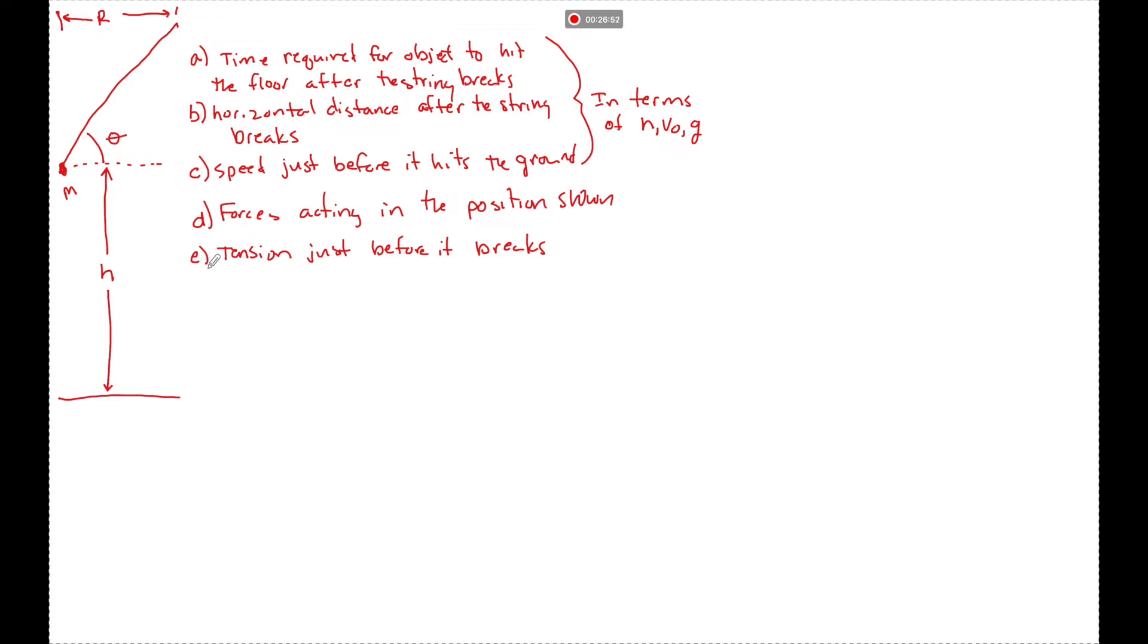What's up guys, another midterm review question. This is an object that's going to be traveling in a horizontal loop. Really hard for me to draw this in three dimensions. If you've done the flying pig lab, that's kind of what this is representing. We have some rope that's holding a mass and it's traveling in a horizontal surface at some angle to the horizontal.